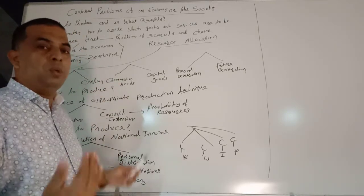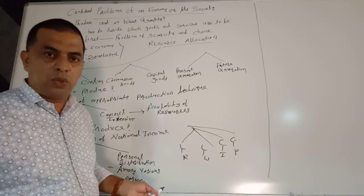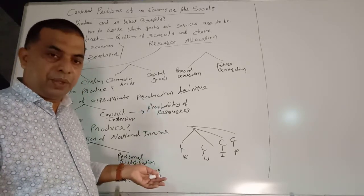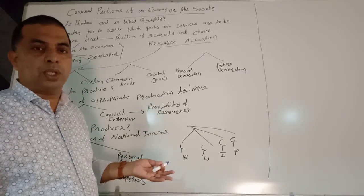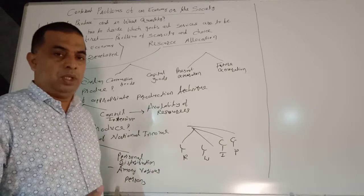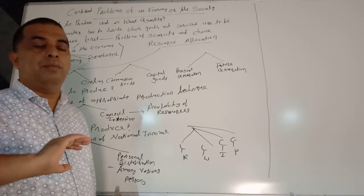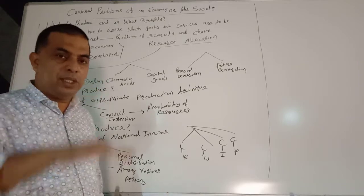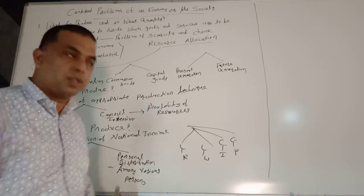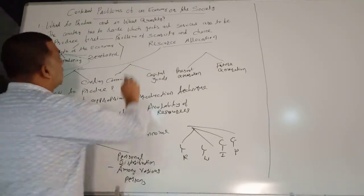On the other hand, developed countries like the US, UK, and Germany can produce luxurious goods and they can import essential commodities from other countries — that is how their resource allocation works. So the first problem is: what to produce? For which goods and services do we give first preference? It is a choice between goods and services to be produced in the first stage and those in the later stage. Next is: in what quantity?